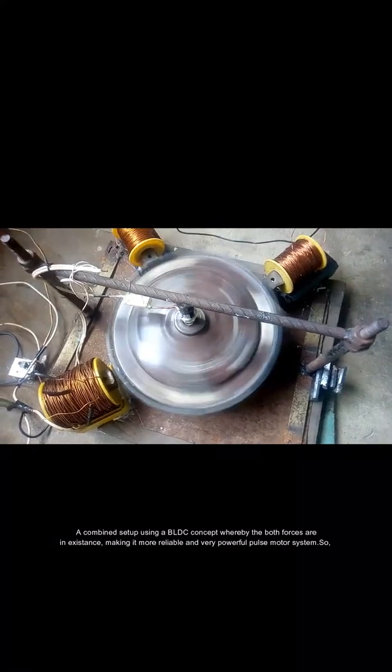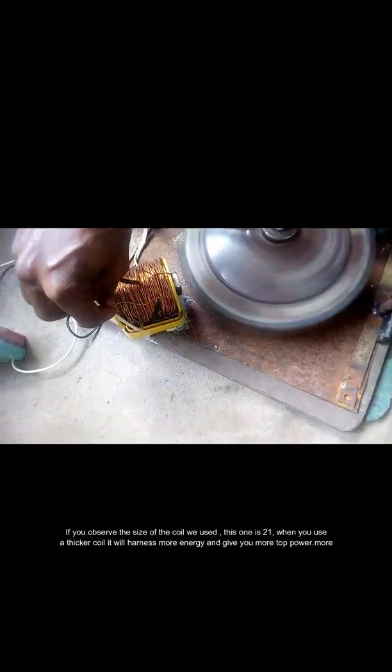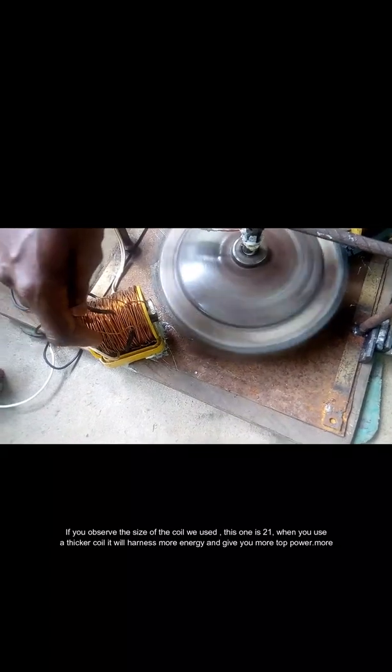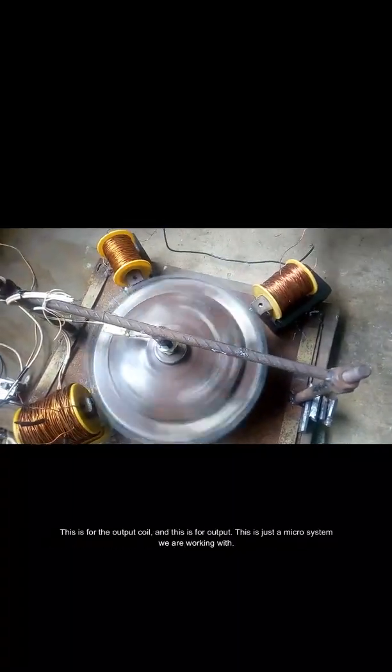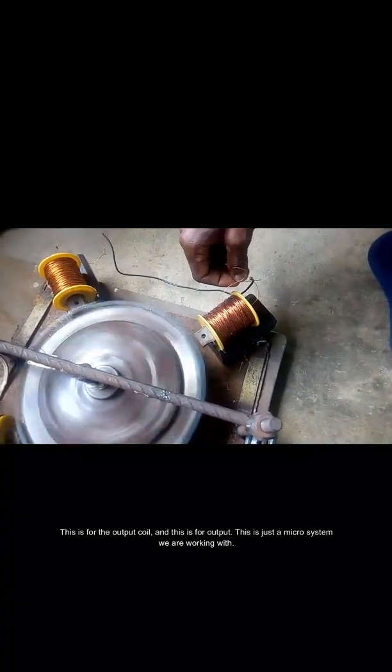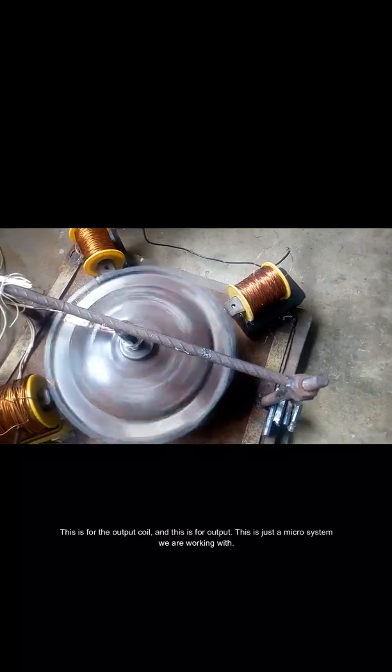Powerful pulse motor system. Observe the size of the core we use. This one is the 21, but the best type is when you use a thicker coil. It will harness more energy and give you more torque power. This is the output coil, and this is the micro system.